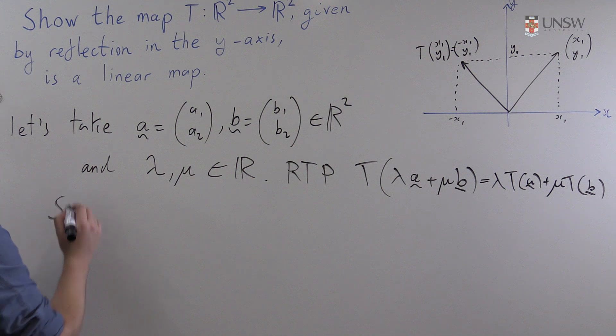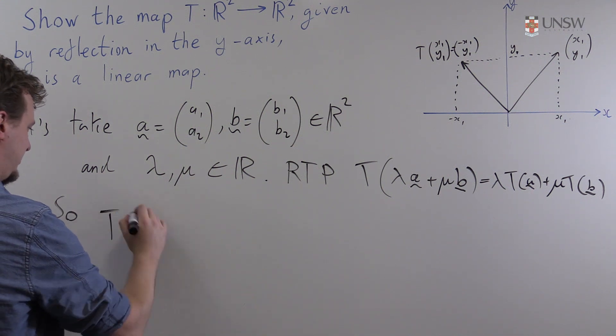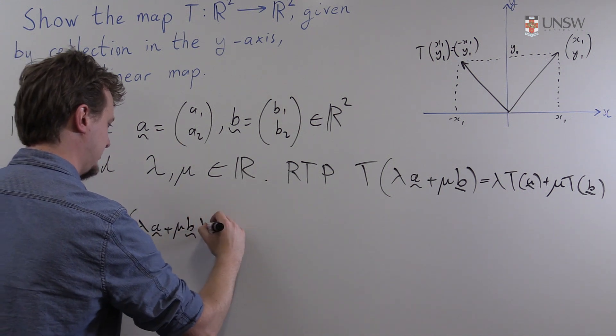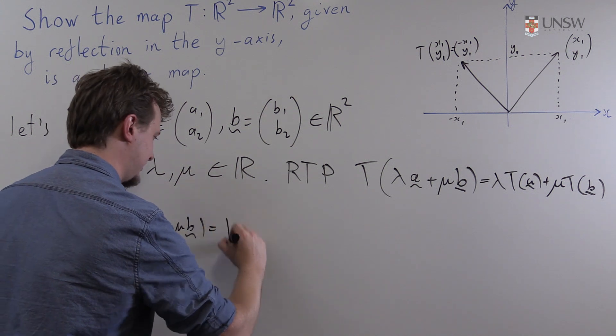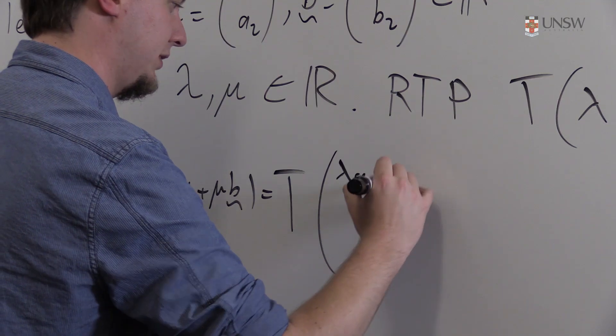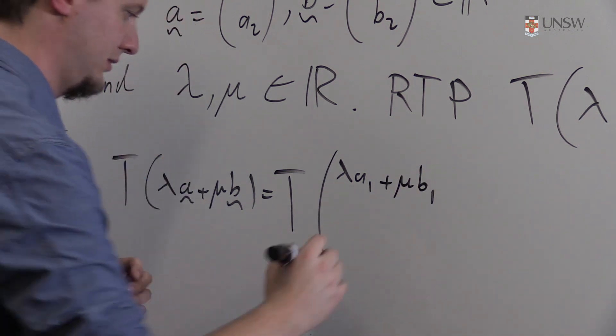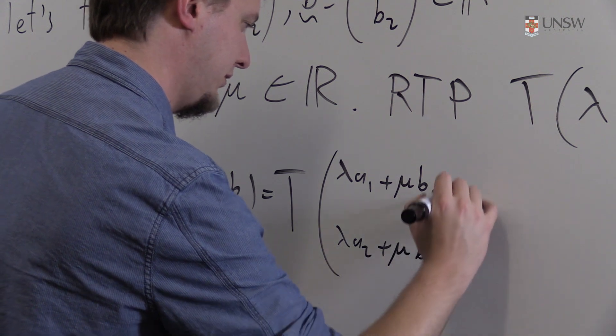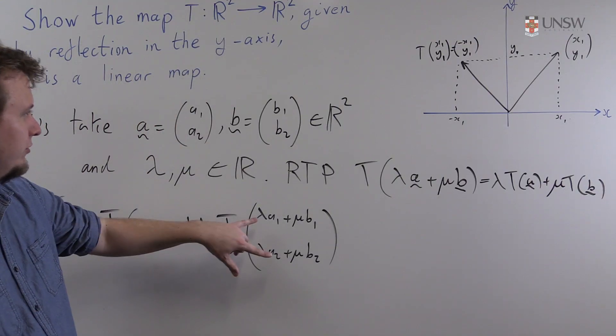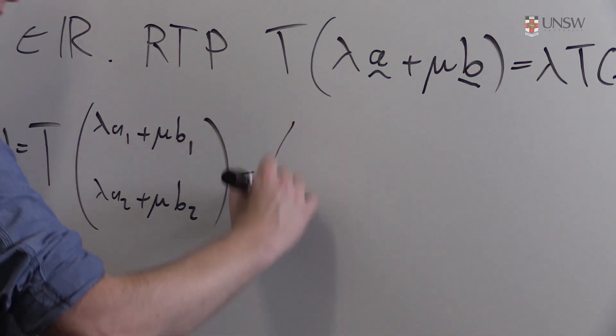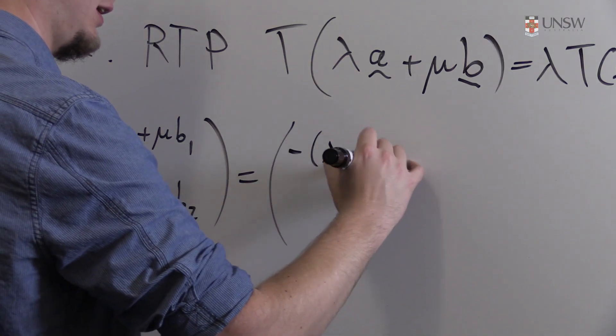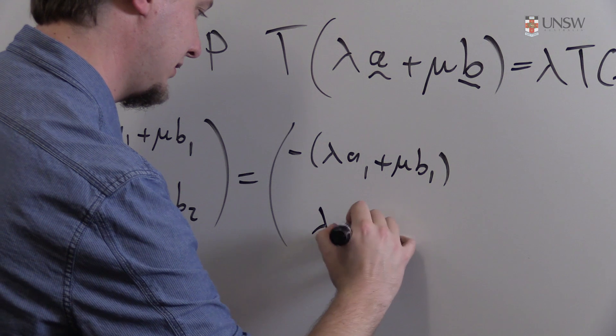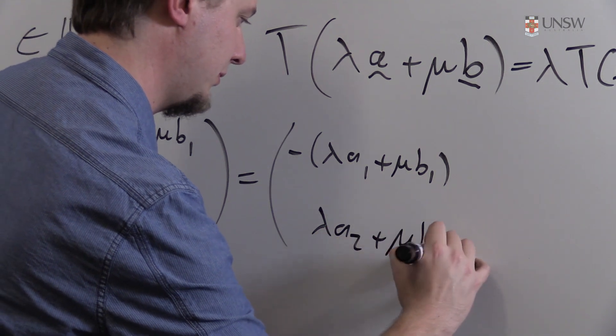All right so the map applied to λa + μb. Well what is the vector contained inside that map? That would be (λa₁ + μb₁, λa₂ + μb₂). And we know what to do with this. We already worked out a formula. This will be (-λa₁ - μb₁, λa₂ + μb₂).